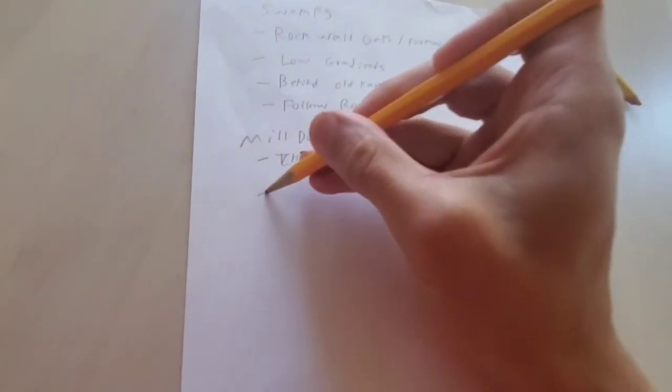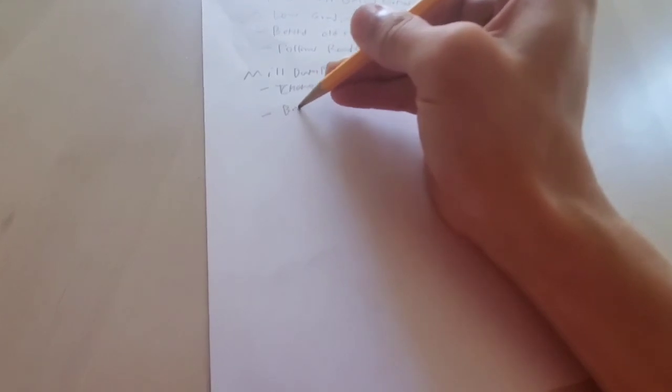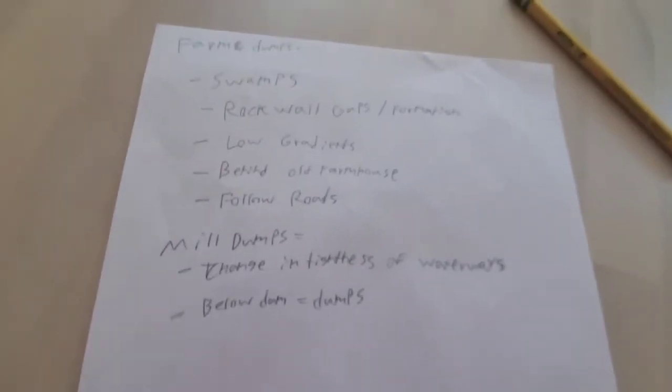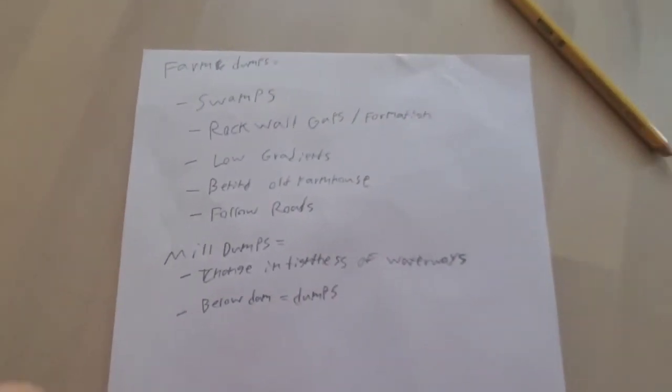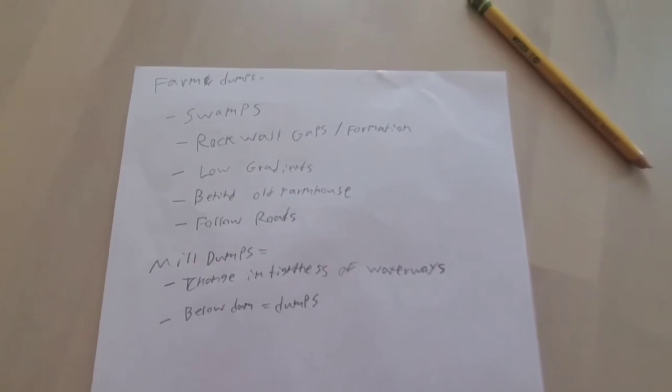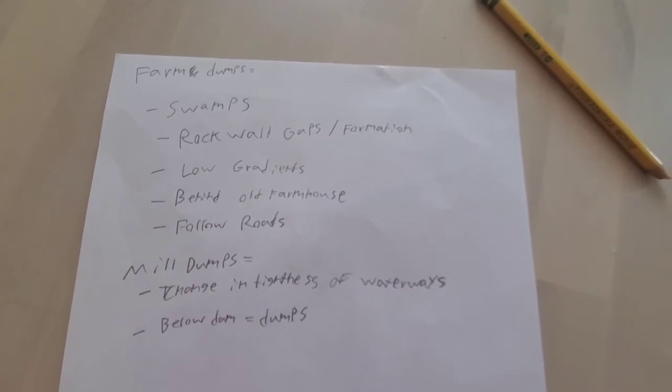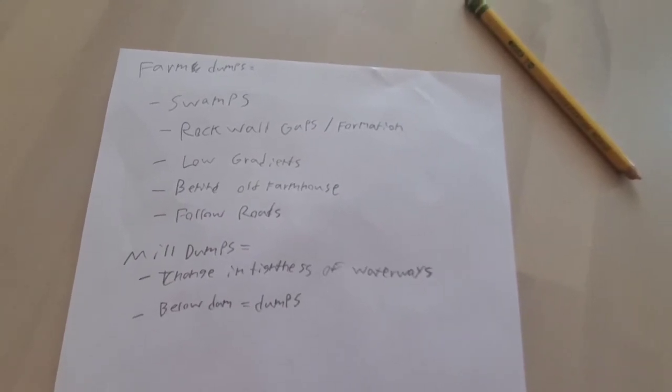Now, you also want to look for below dam equals dumps, because they would not dump in front of the dam, because that's what they're using to propel the water. They dump after it, where the water is draining out of the dam. Now, again, this is kind of, you know, amateur kind of thing, but this does work finding dumps. This is how I find a lot of my dumps, so this is pretty much what you want to follow to find bottles.